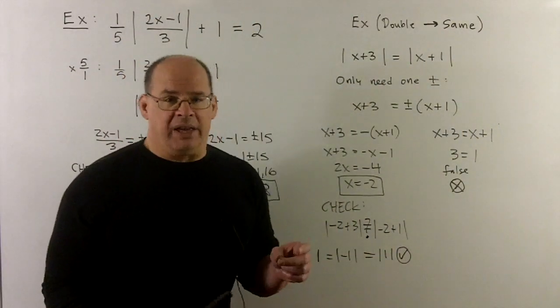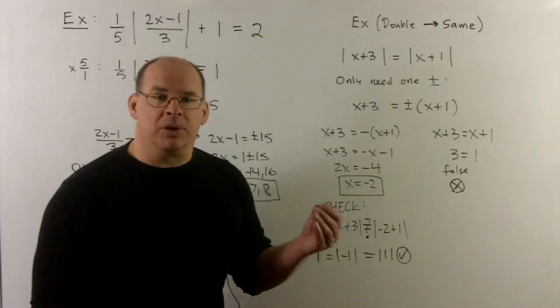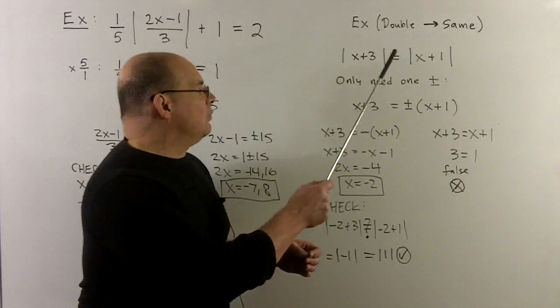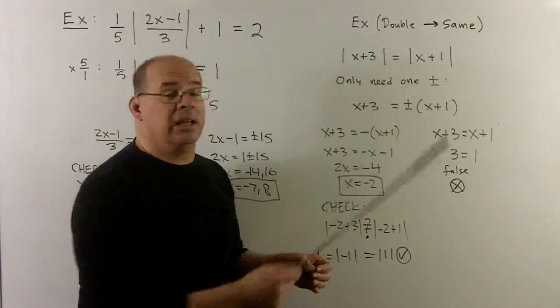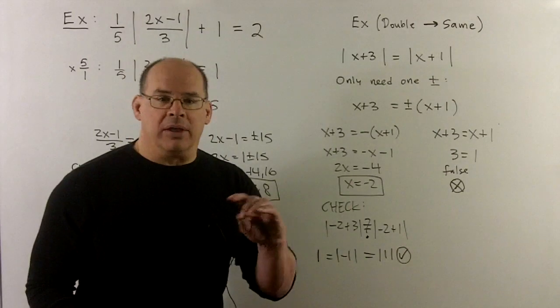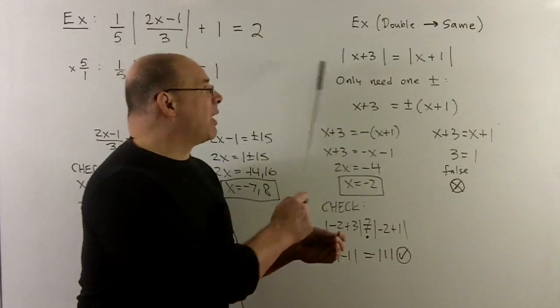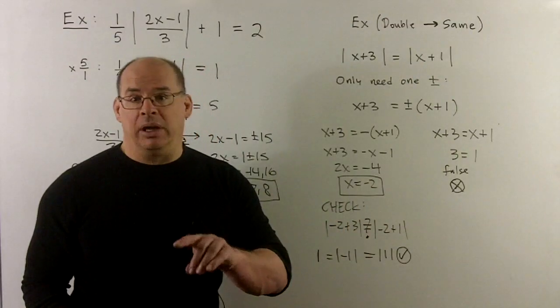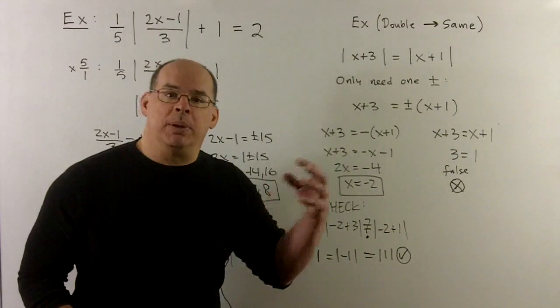Now, one special case, and we're not going to focus heavily on it, but it's worth showing. If we've got two isolated absolute values on either side of an equals, the process is exactly the same. What do we do? If I remove bars, we plus minus.